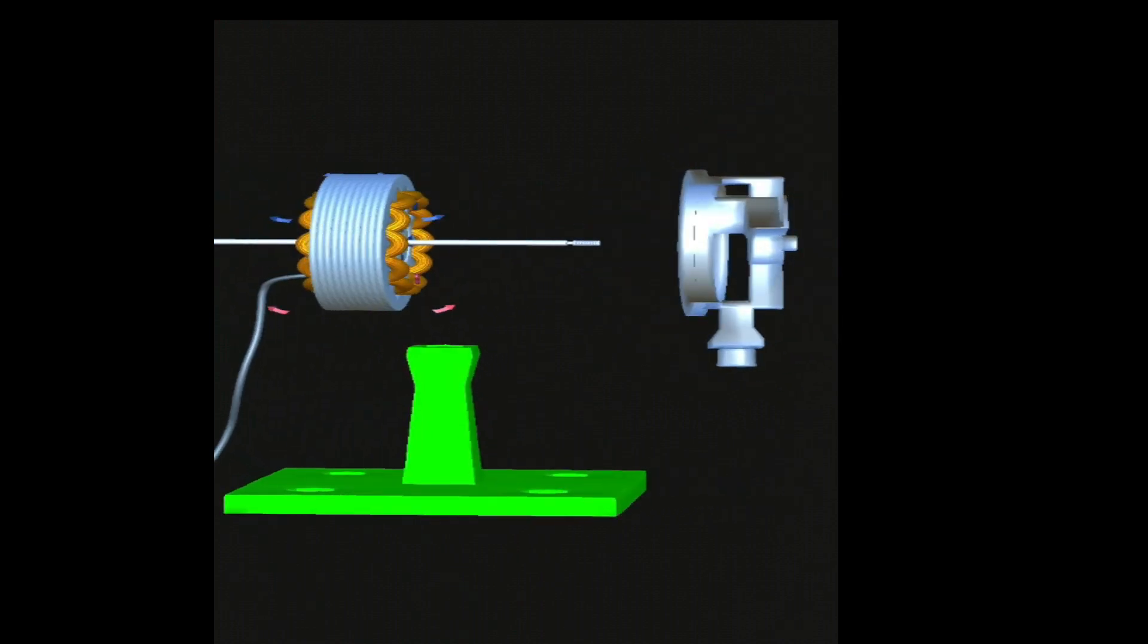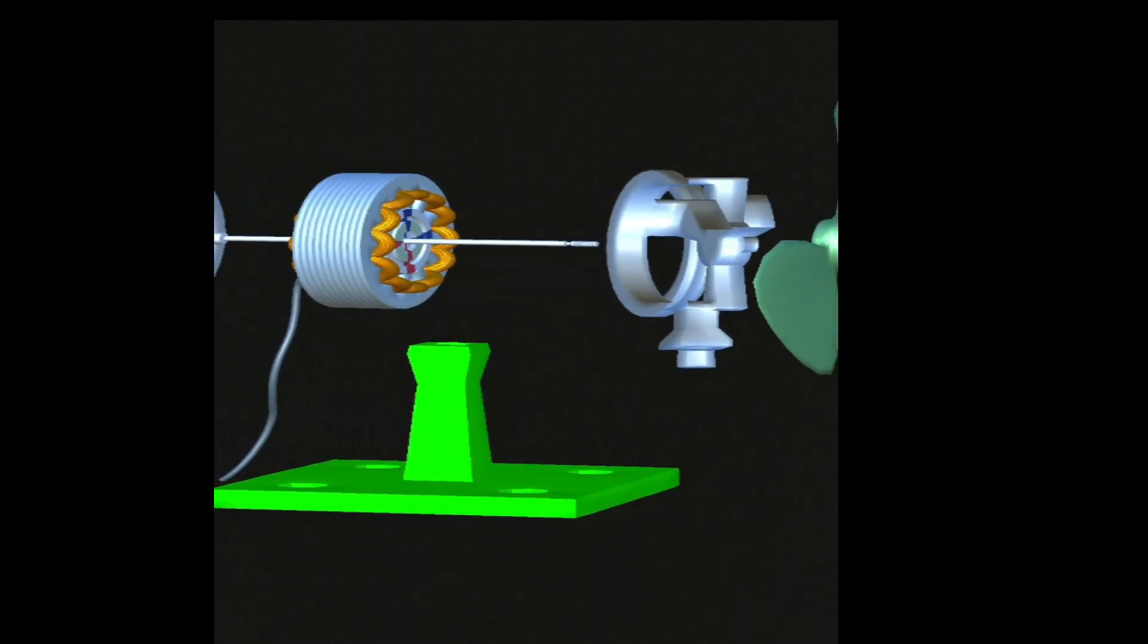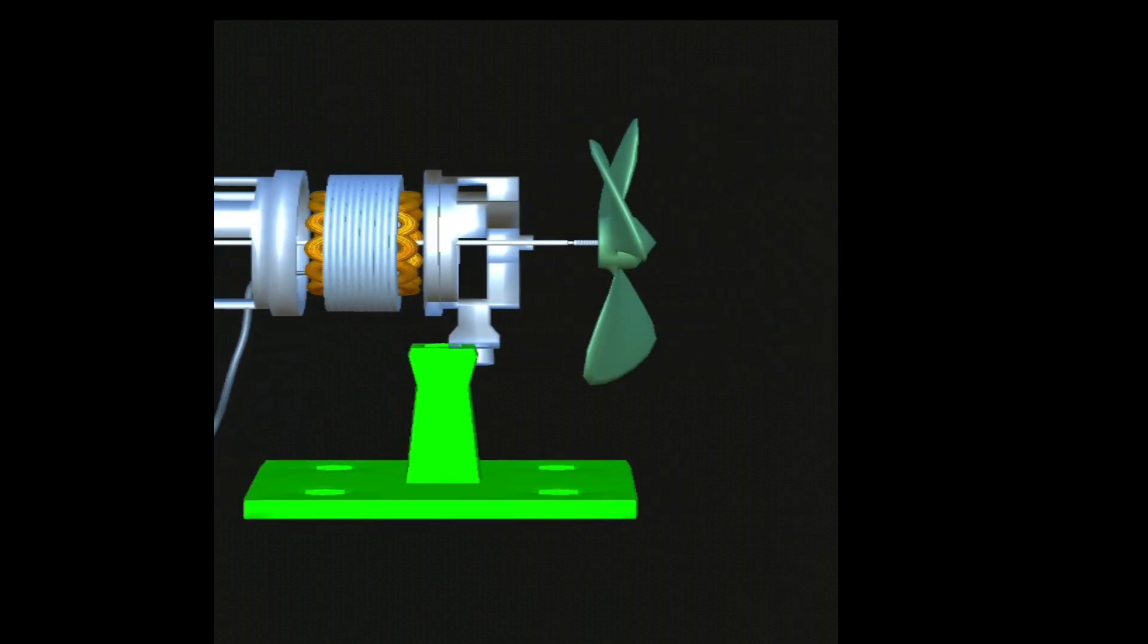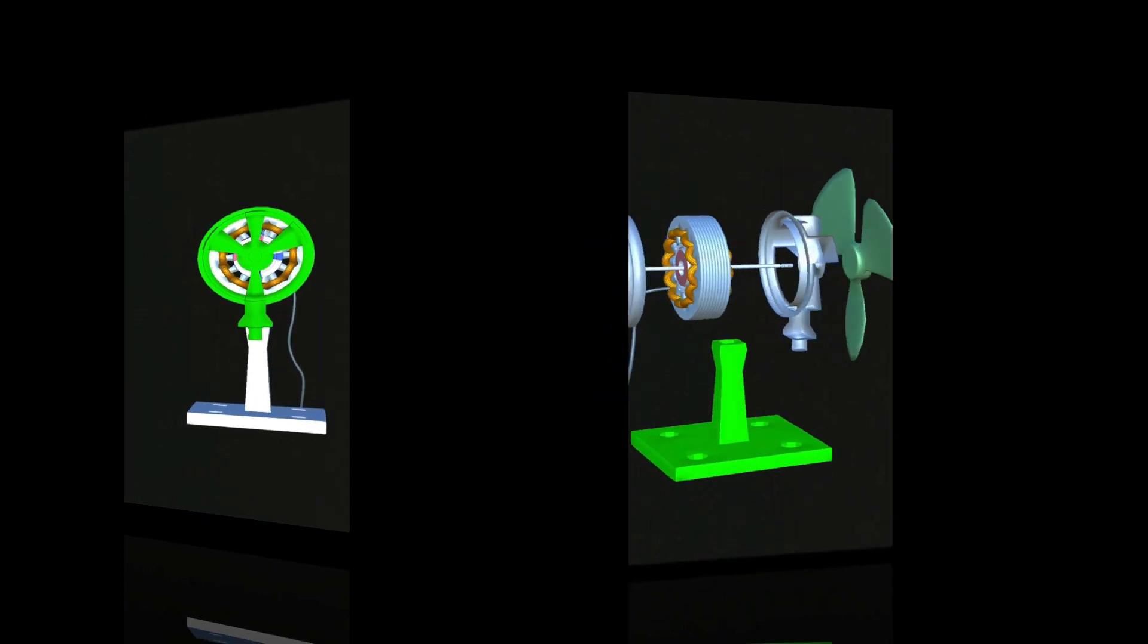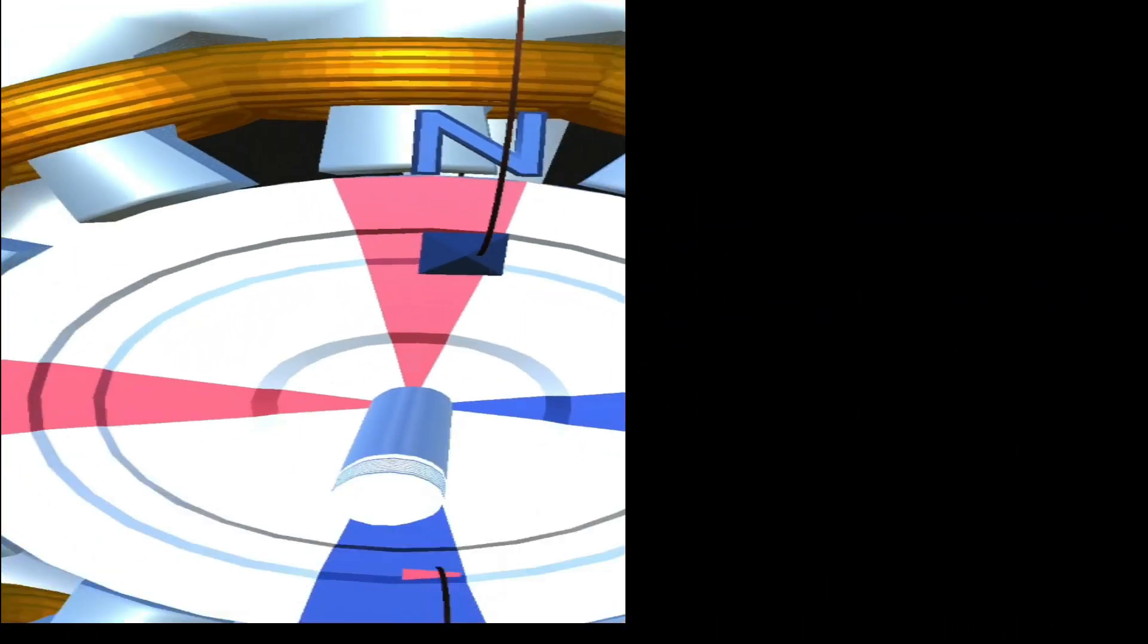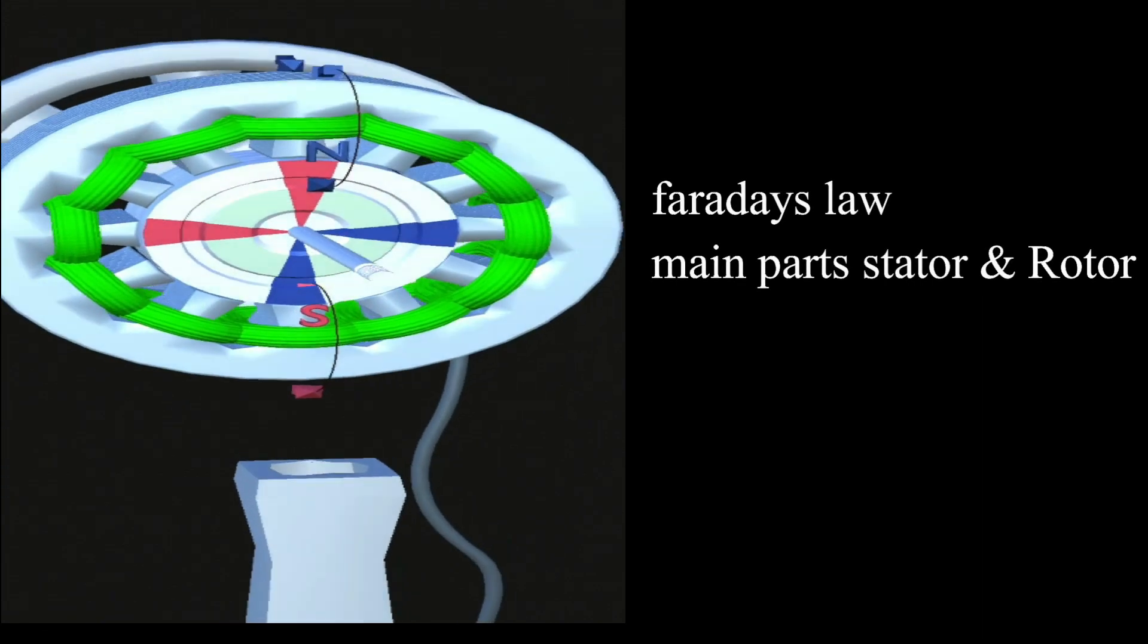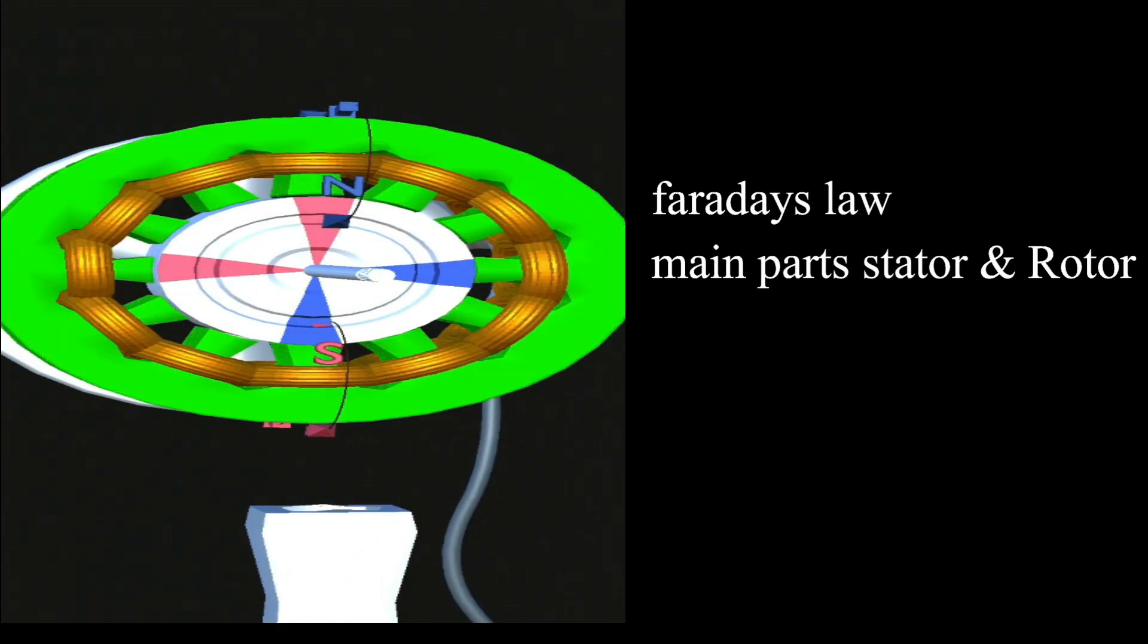With the help of this table fan, I will show you how the single-phase induction motor is working with all the internal parts and functions. We know the single-phase induction motor works on the principle of Faraday's law. There are two parts in the induction motor: one is the stator, and another one is the rotor.